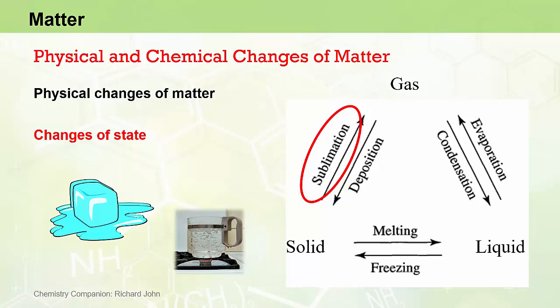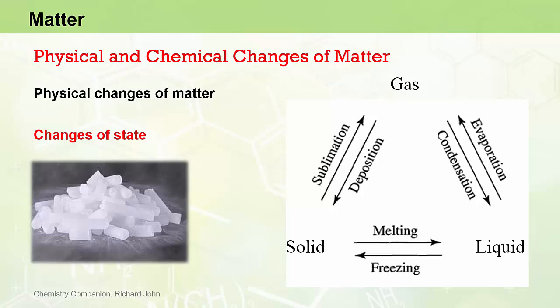The reverse, a transformation of a gas directly to a solid without going through the liquid state first, is known as deposition. Not many substances undergo sublimation or deposition at room temperature and pressure, but one common substance that does is carbon dioxide. Solid carbon dioxide, otherwise known as dry ice, at room temperature and pressure will sublimate and change directly from the solid state to the gaseous state of carbon dioxide without going through the wet liquid state, hence the name dry ice.